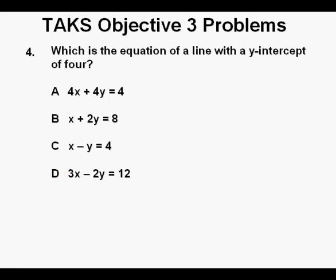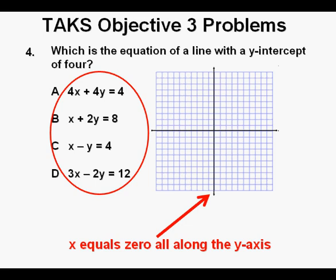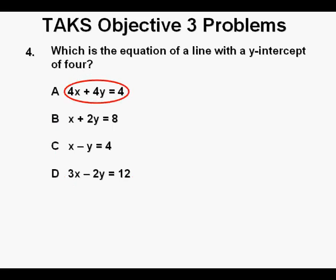Problem number 4, which is the equation of a line with a y-intercept of 4? We are given four linear equations as answer choices A through D and are asked, which one has a y-intercept of 4? We should remember that on a graphical plane, the y-intercept is found where x = 0 along the y-axis. So all we have to do is replace the x in each equation with 0.